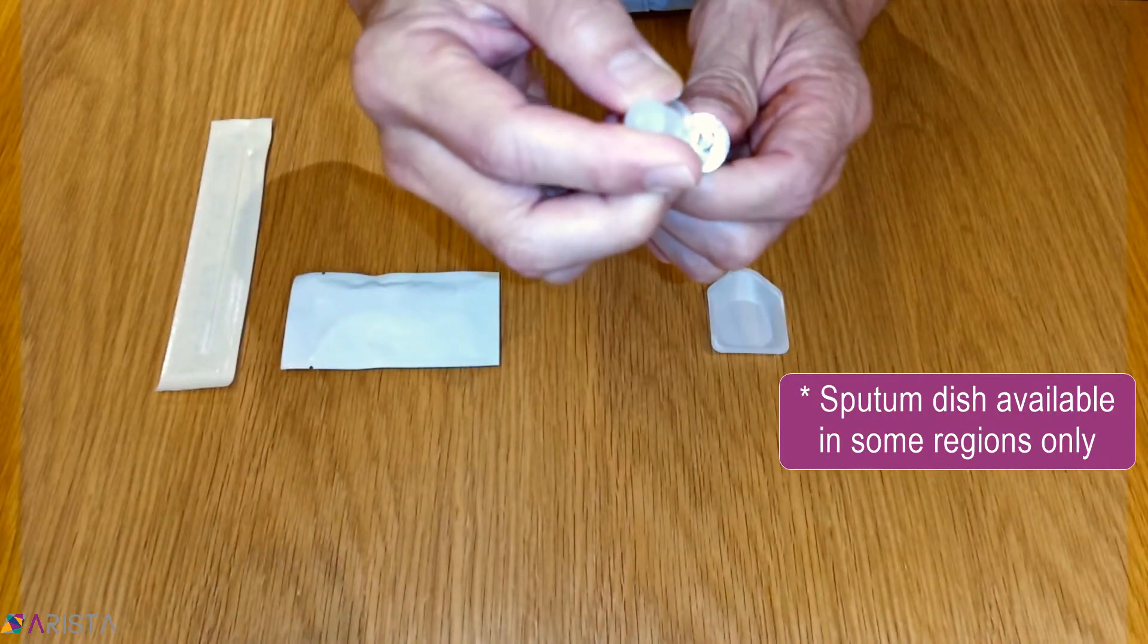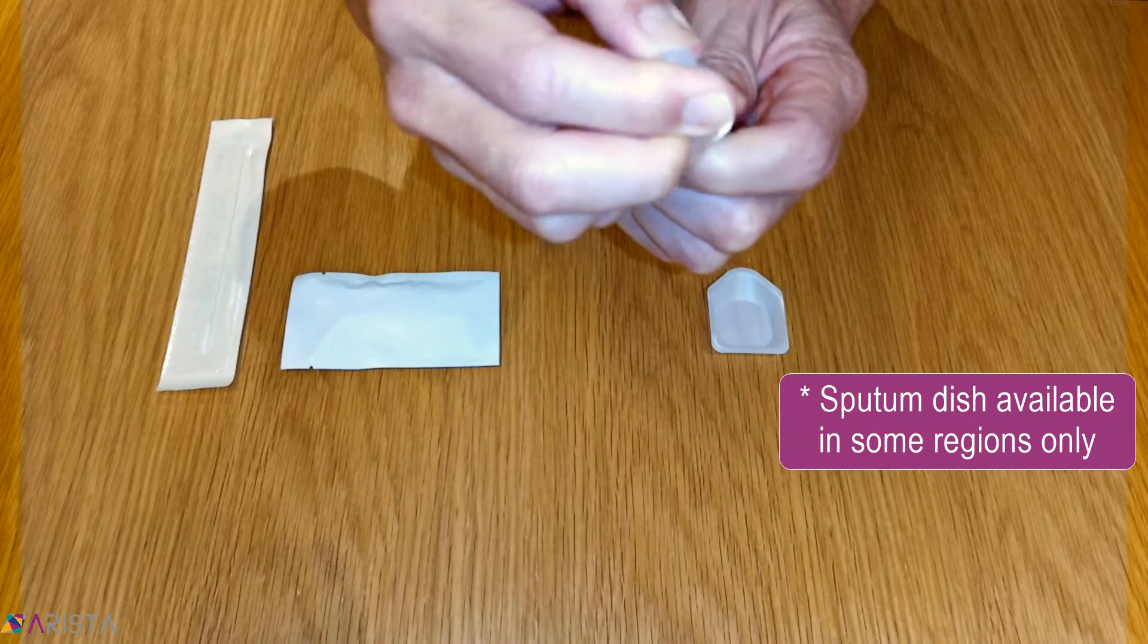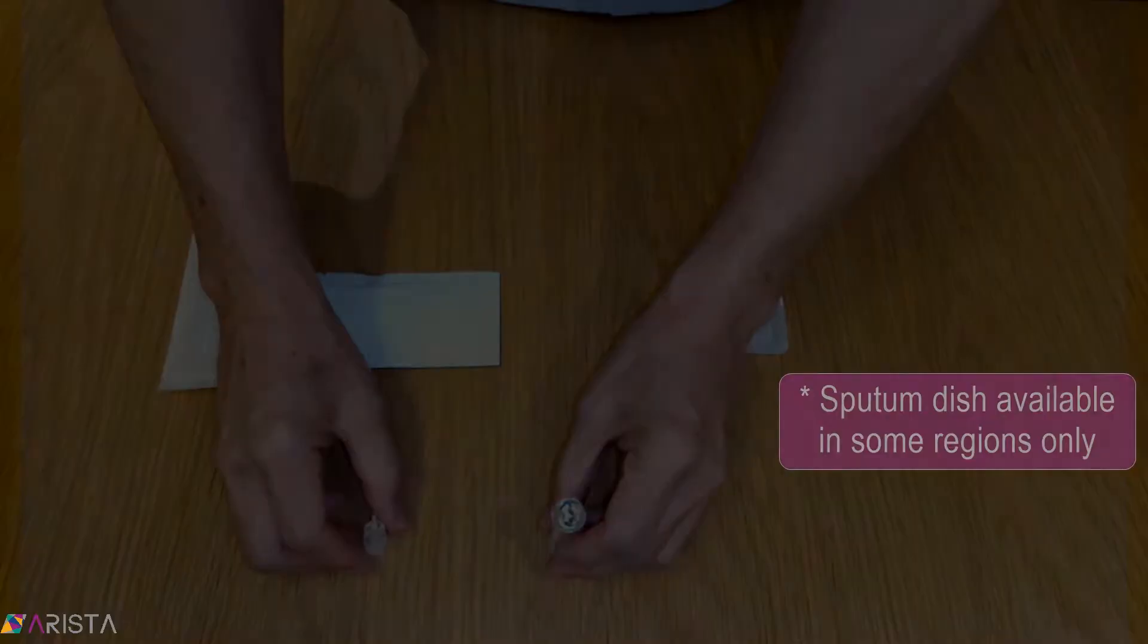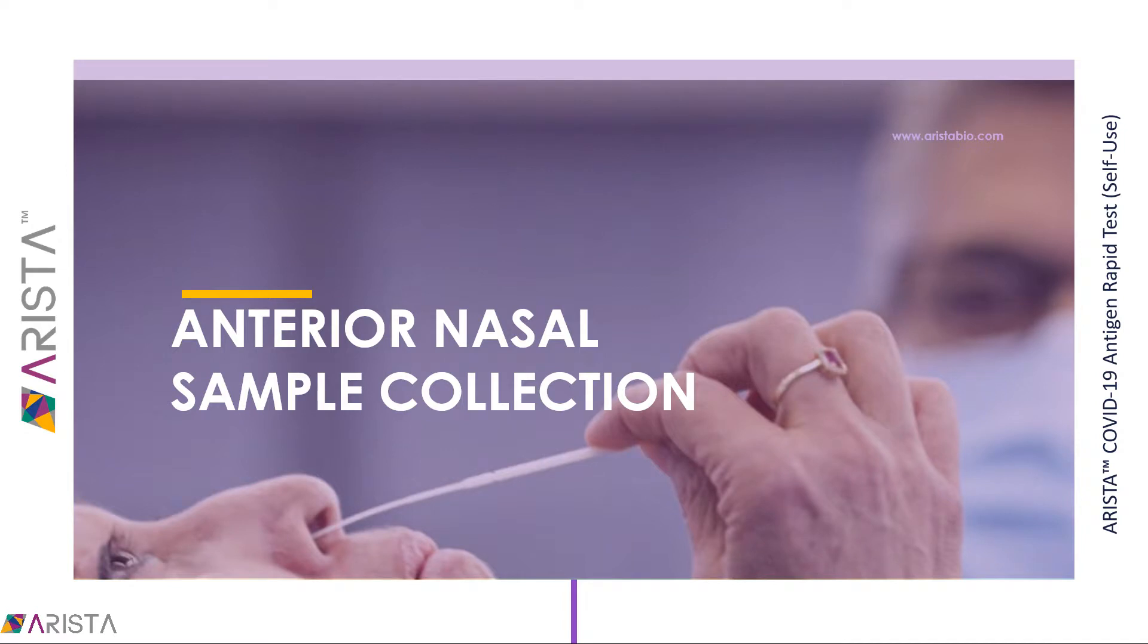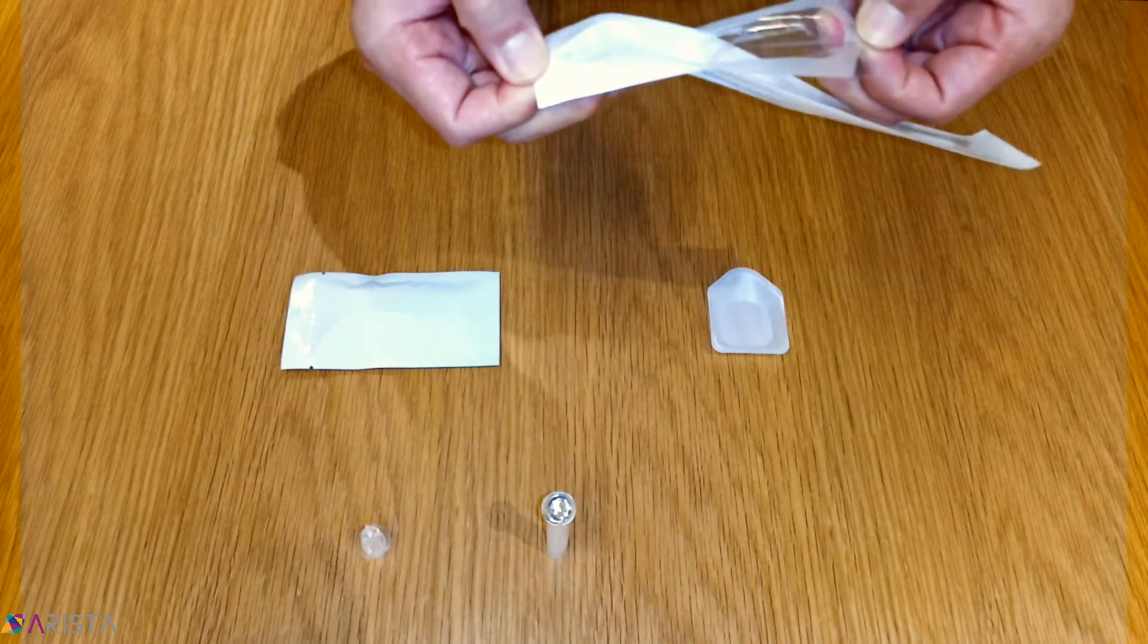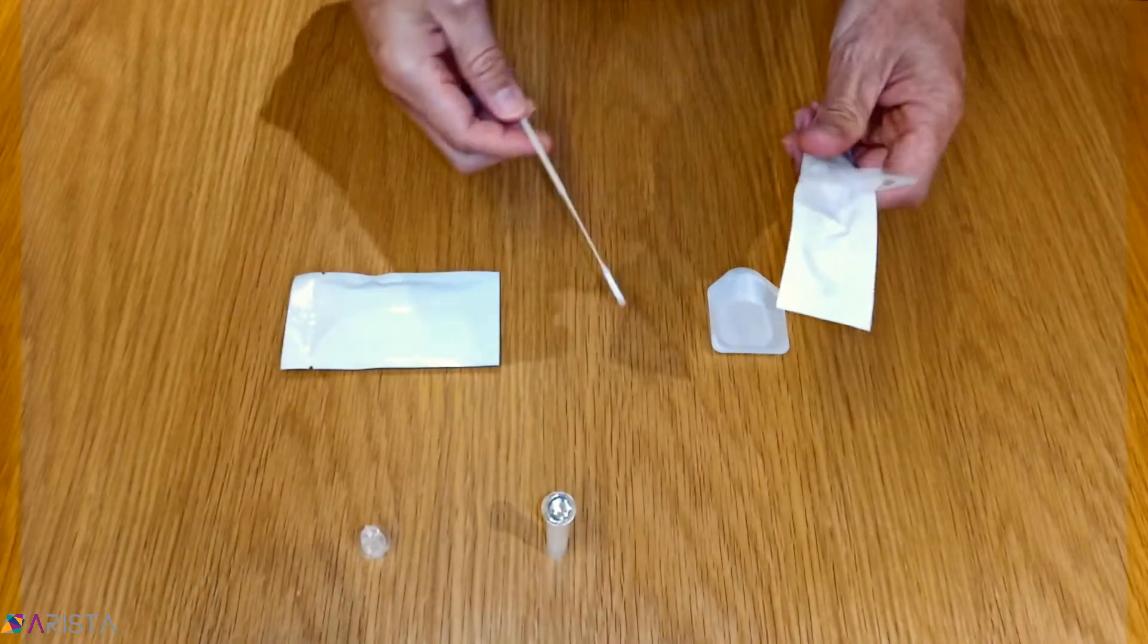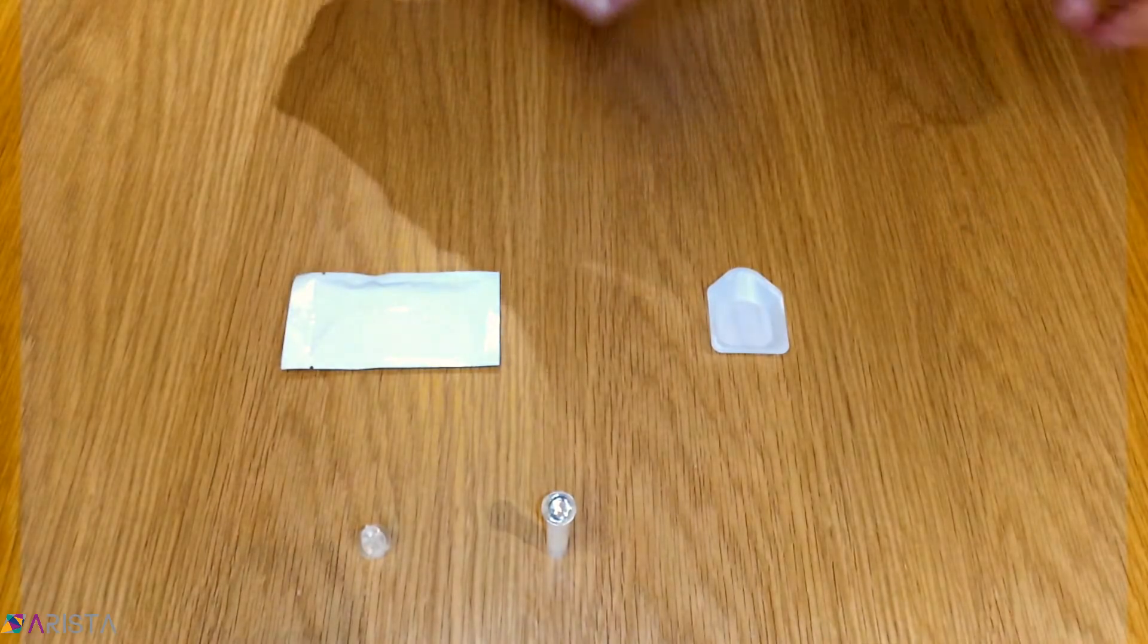Pierce the foil seal of the tube with diluent using the long pointed end of the dropper. Remove the sterile swab from the pill pack, being careful to avoid touching the sponge tip with your hands or contacting it with any foreign surface.